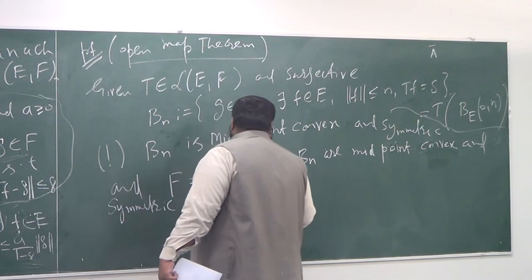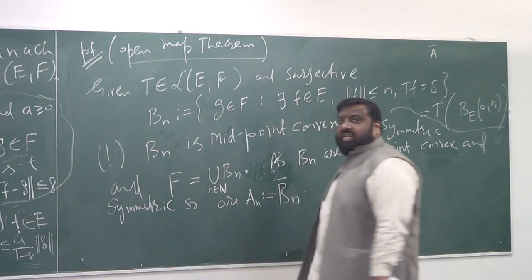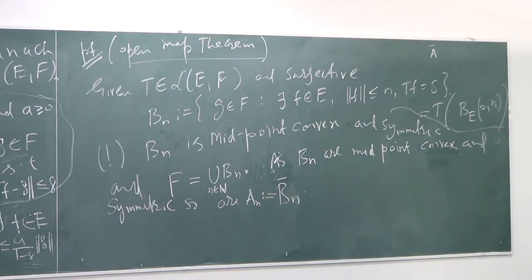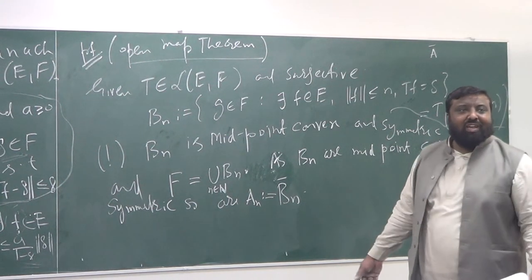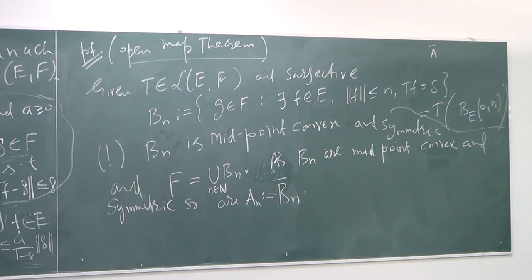A student asks: isn't B_n already closed since T is continuous? The instructor responds firmly: No. Continuous maps don't necessarily map closed sets to closed sets — that's not what continuity says. If we assumed T maps closed sets to closed sets, we'd be assuming what we're trying to prove. Continuity means preimages of open sets are open.